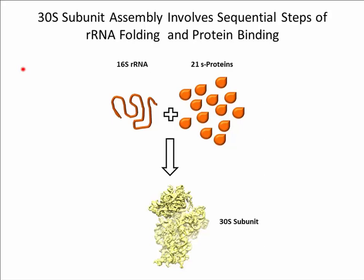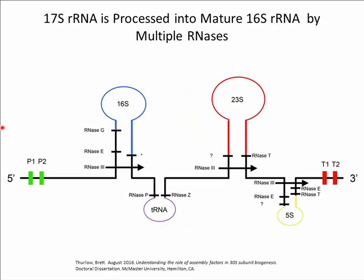30S ribosome biogenesis is a complex process involving the assembly of 21 proteins and an RNA molecule in a series of overlapping steps. Initially, the RNA is transcribed from an operon and processed while S proteins are simultaneously being translated. The RNA then begins to fold into its secondary and tertiary structure and S proteins bind to the RNA scaffold to help stabilize the structure. Lastly, there is a series of RNA and protein modifications that can occur. Once the RNA has adopted its final tertiary structure and all proteins have bound, the 30S subunit is able to associate with the 50S subunit during translation initiation. Essentially, the process of ribosome subunit biogenesis is an intricate dance of RNA folding and simultaneous S protein binding.